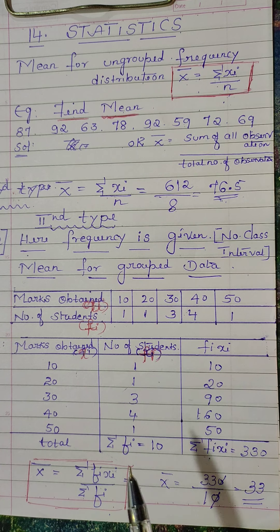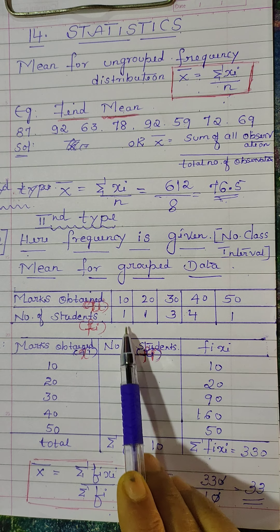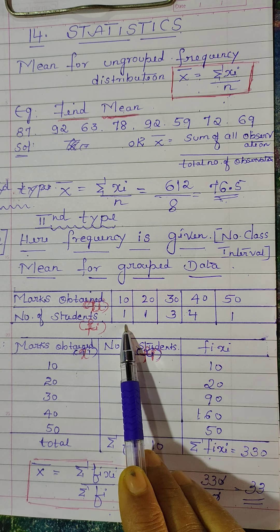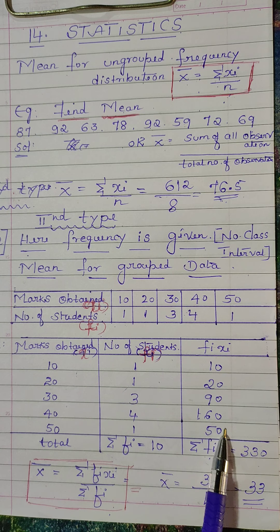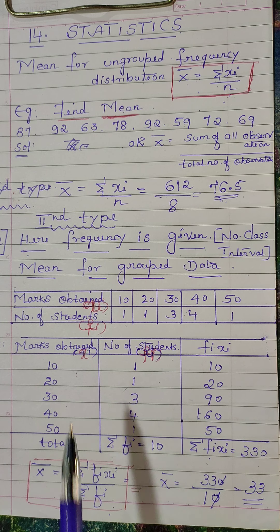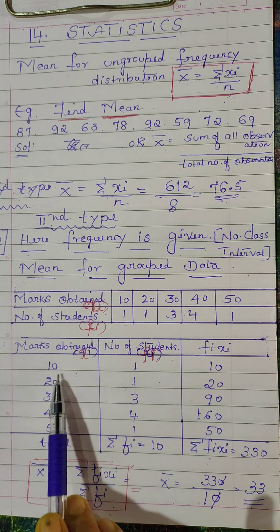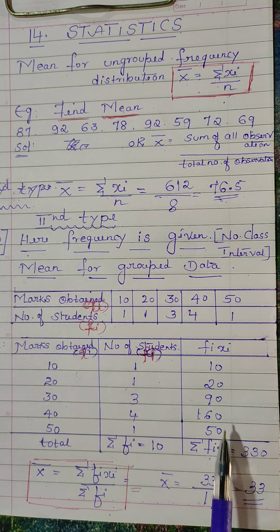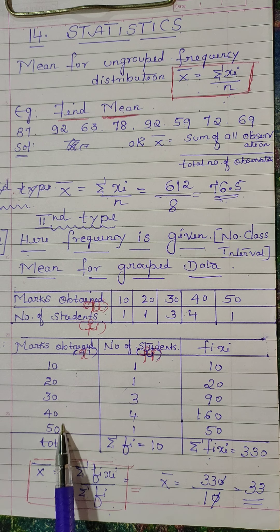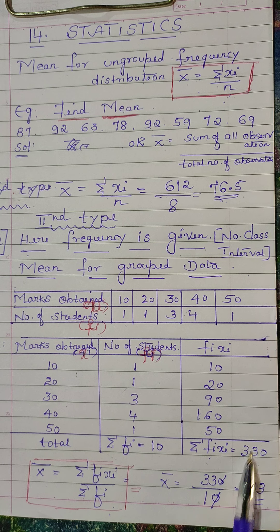Now according to the formula, fᵢxᵢ — this is your xᵢ value and this is your fᵢ value. So now you multiply fᵢ into xᵢ; you have to make 3 columns. Write the columns and then multiply. fᵢxᵢ means: 10 ones are 10, 20 ones are 20, then 3 threes are 90, 4 fours are 160, 50 ones are 50. Then find the total — that is 330.